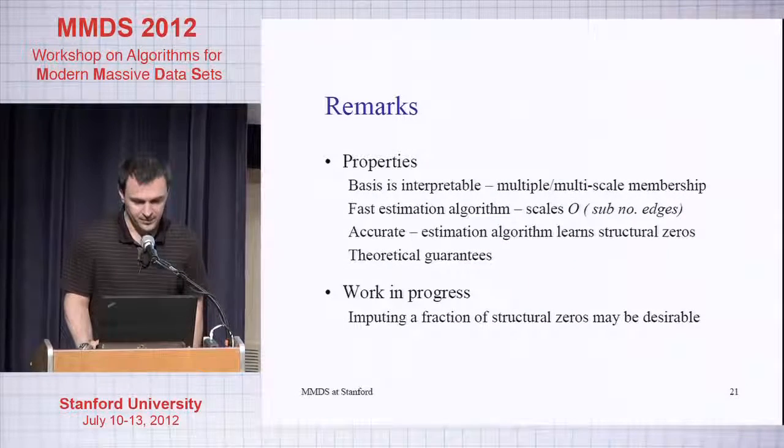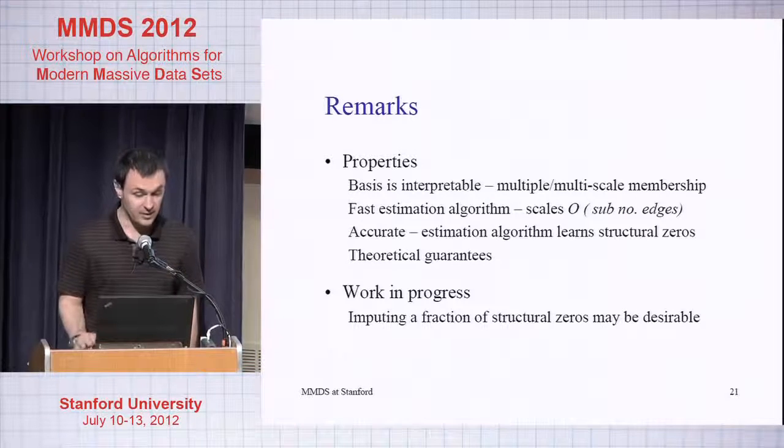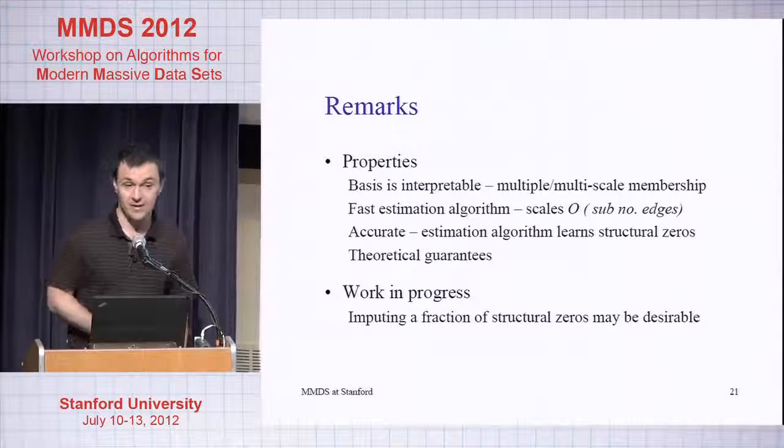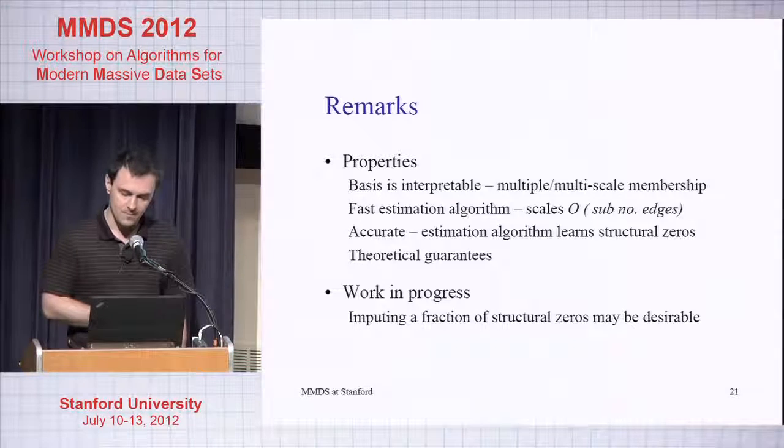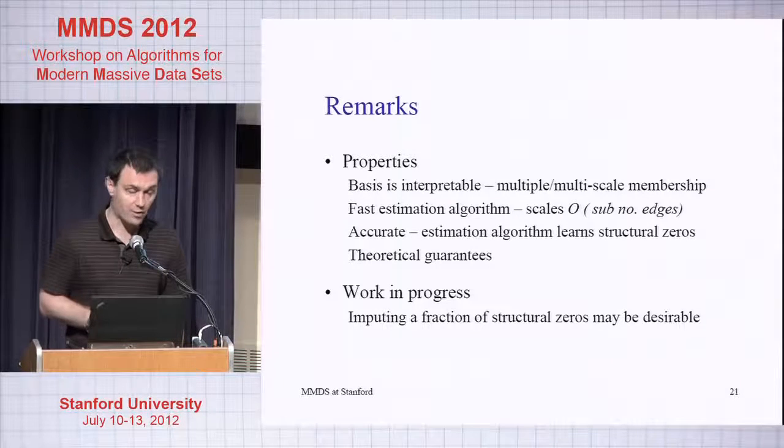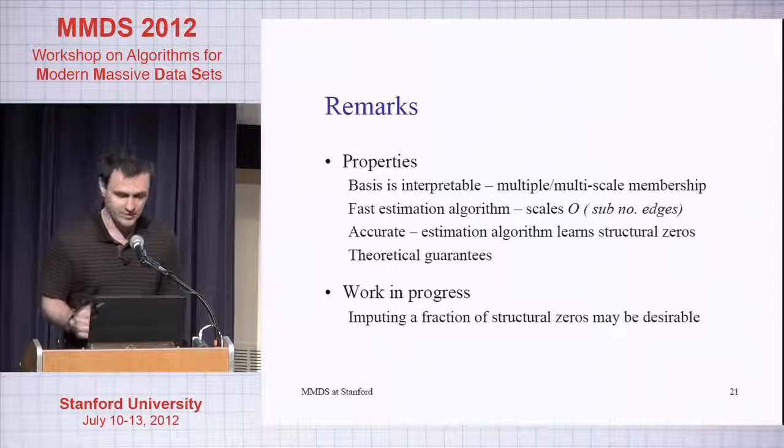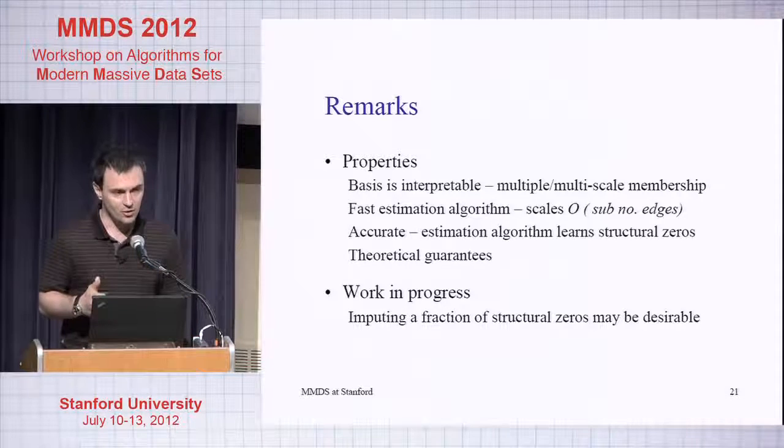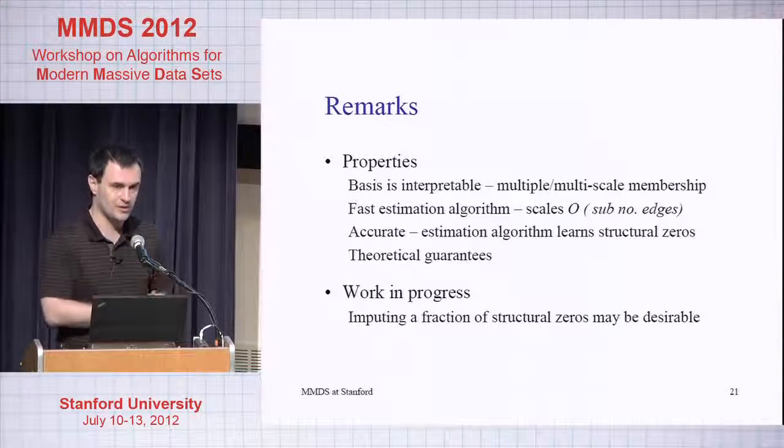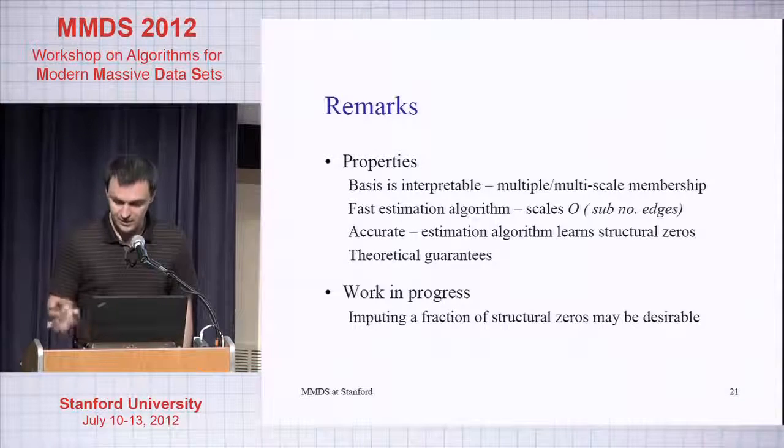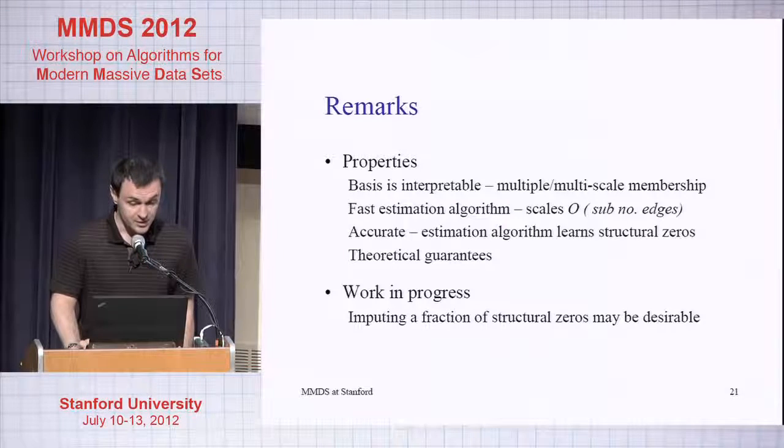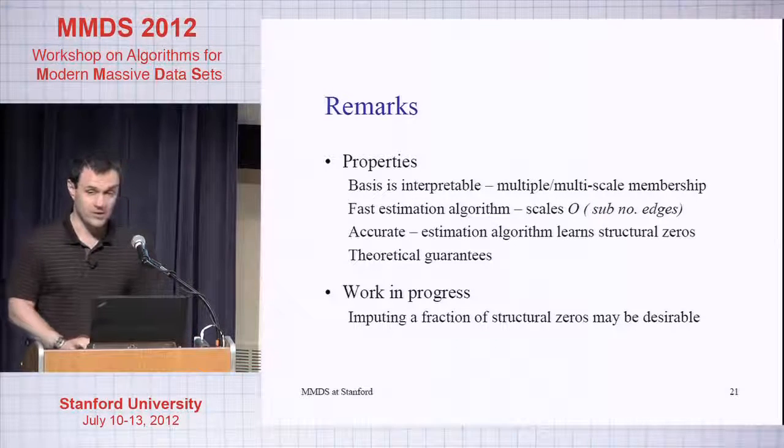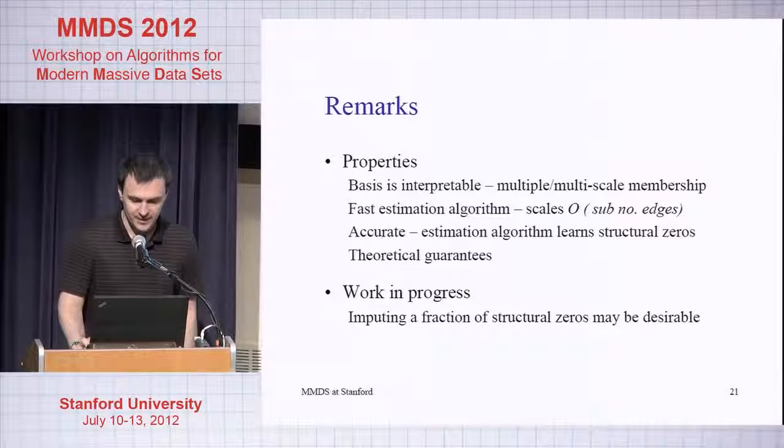I'm just going to wrap up very quickly. The properties again is that the basis are interpretable in terms of membership. They are non-orthogonal, but we can achieve interpretability with non-orthogonal basis. There is still a technical condition on the set of basis: they are linearly independent in some space. The estimation algorithm is fast in practice. They seem to be accurate, and we actually can prove some theoretical guarantees.